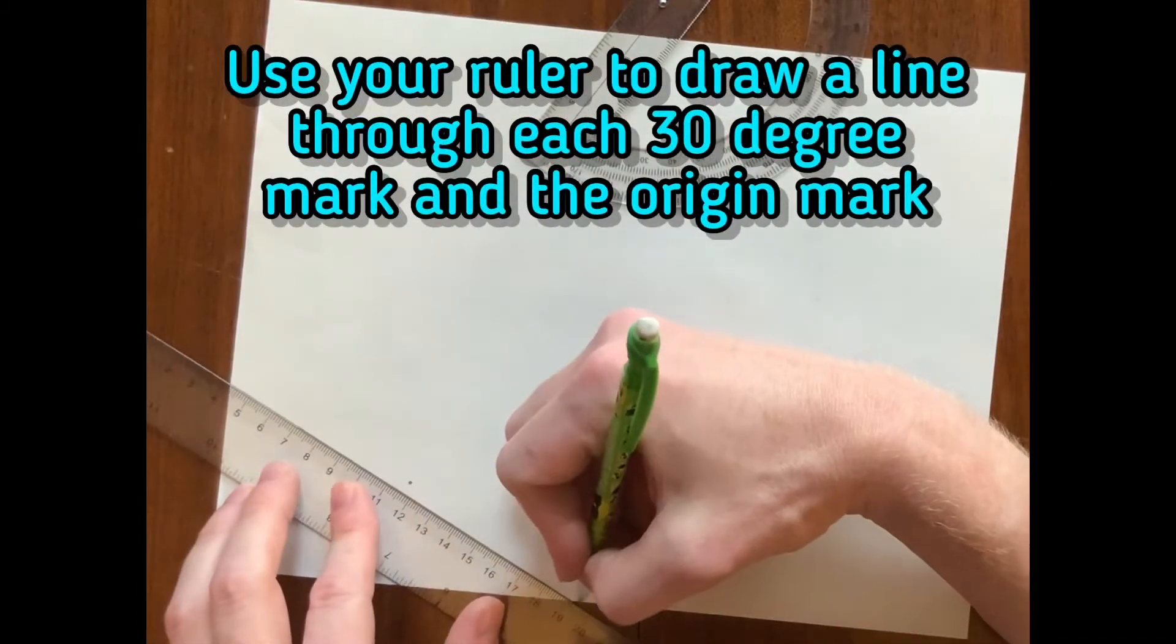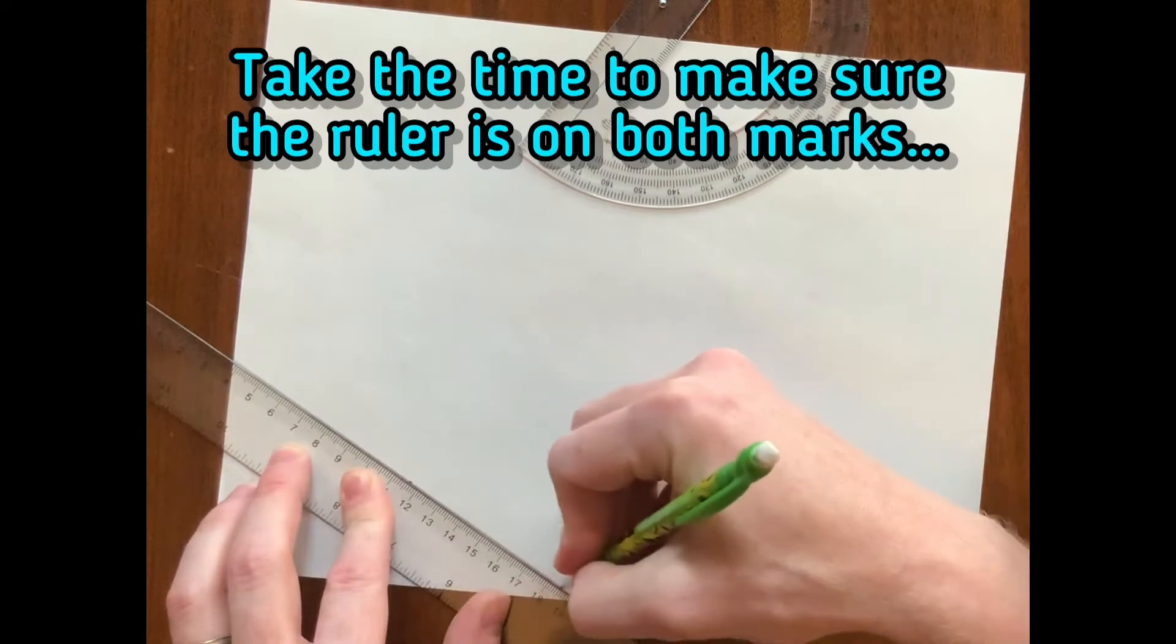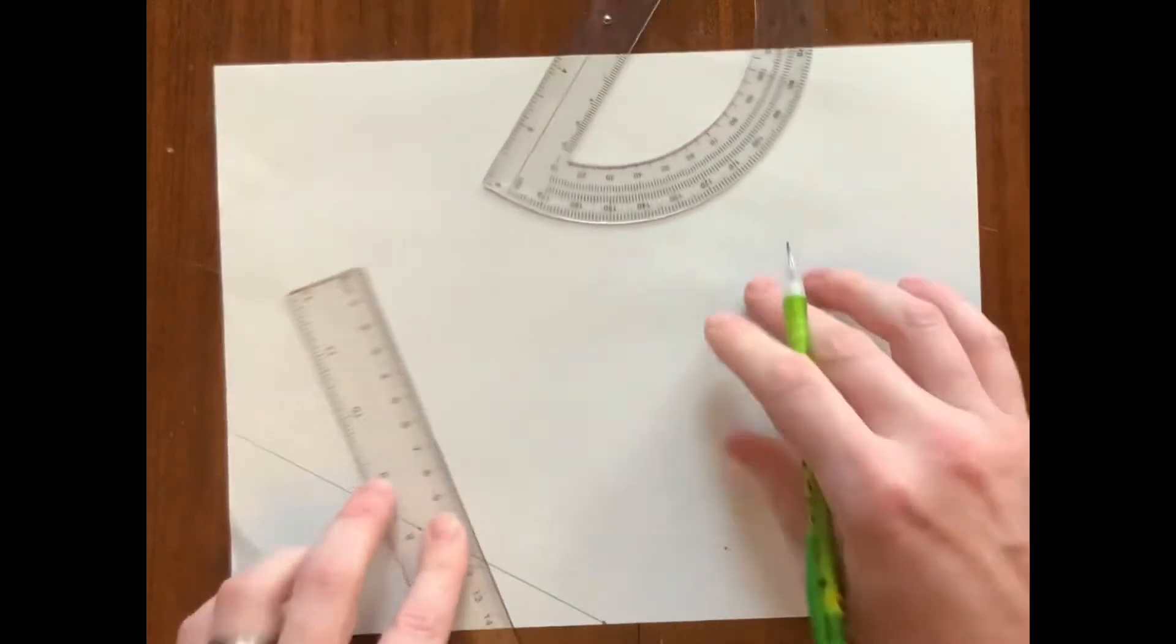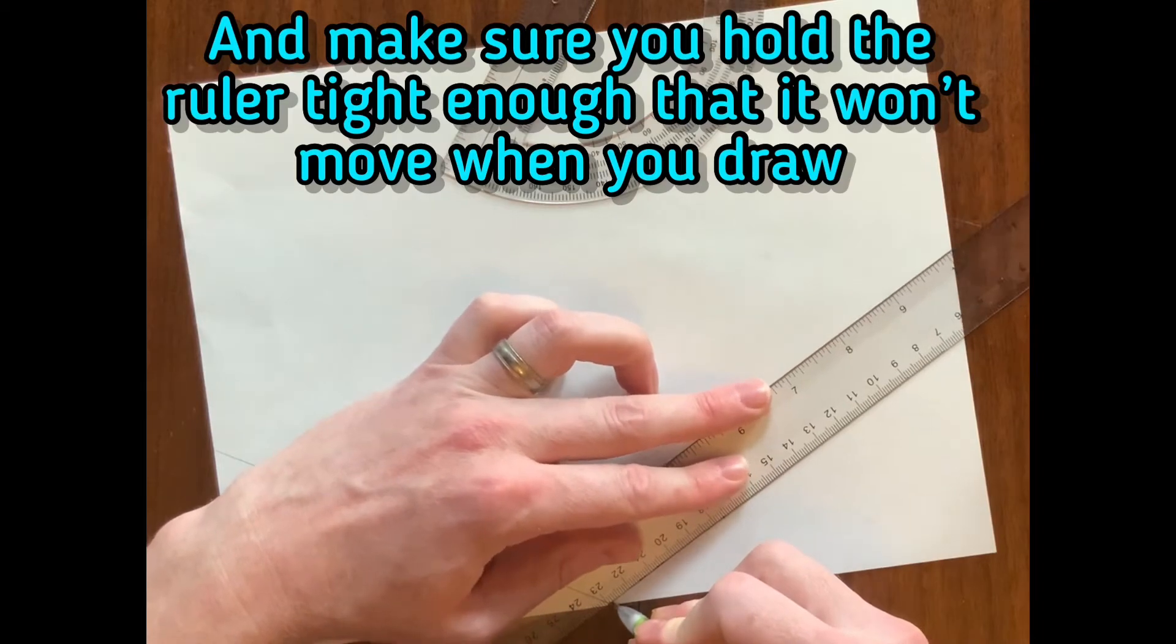Use your ruler to draw a line through each 30 degree mark. Take the time to make sure the ruler is on both marks. Make sure you hold the ruler tight enough so it won't move when you draw.